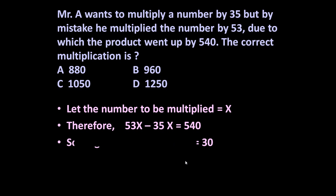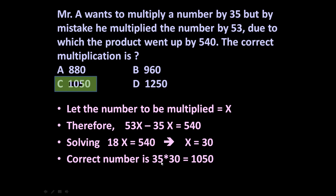So let us solve this equation to determine the value of x. So their difference is 18. 18x is equal to 540. It means x is equal to 30. So correct multiplication is 35 into 30 is equal to 1050. So answer is C 1050.